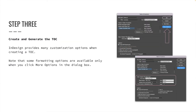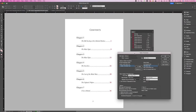The table of contents panel might look intimidating at first, so let's look at the options available and understand what they do. Note that some formatting options are available only when you click More Options in the dialog box. Now that the table of contents panel is open, let's review the options from top to bottom. TOC Style: choose a predetermined TOC style if appropriate; otherwise it is set to Default.